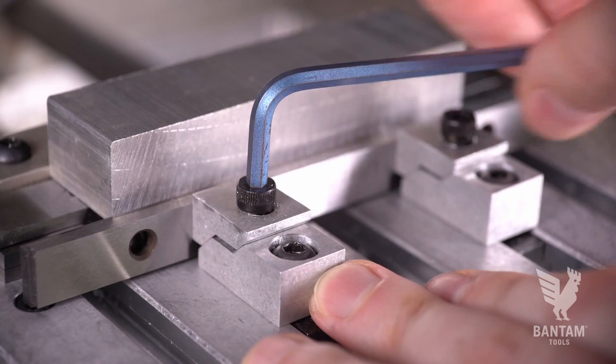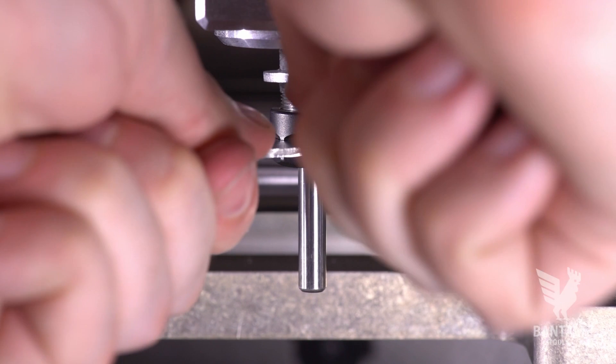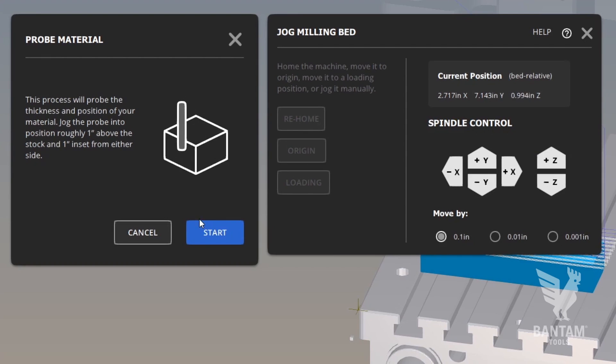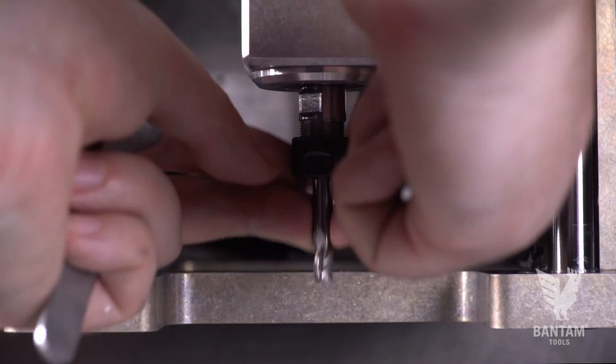We'll tighten down our toe clamps, back screws first, then the jaws, while pressing down on the stock and install our quarter inch probe. Then we'll launch the automatic stock location tool to locate the stock in the machine. And with these values accepted, we're ready to install our first tool and begin the job.